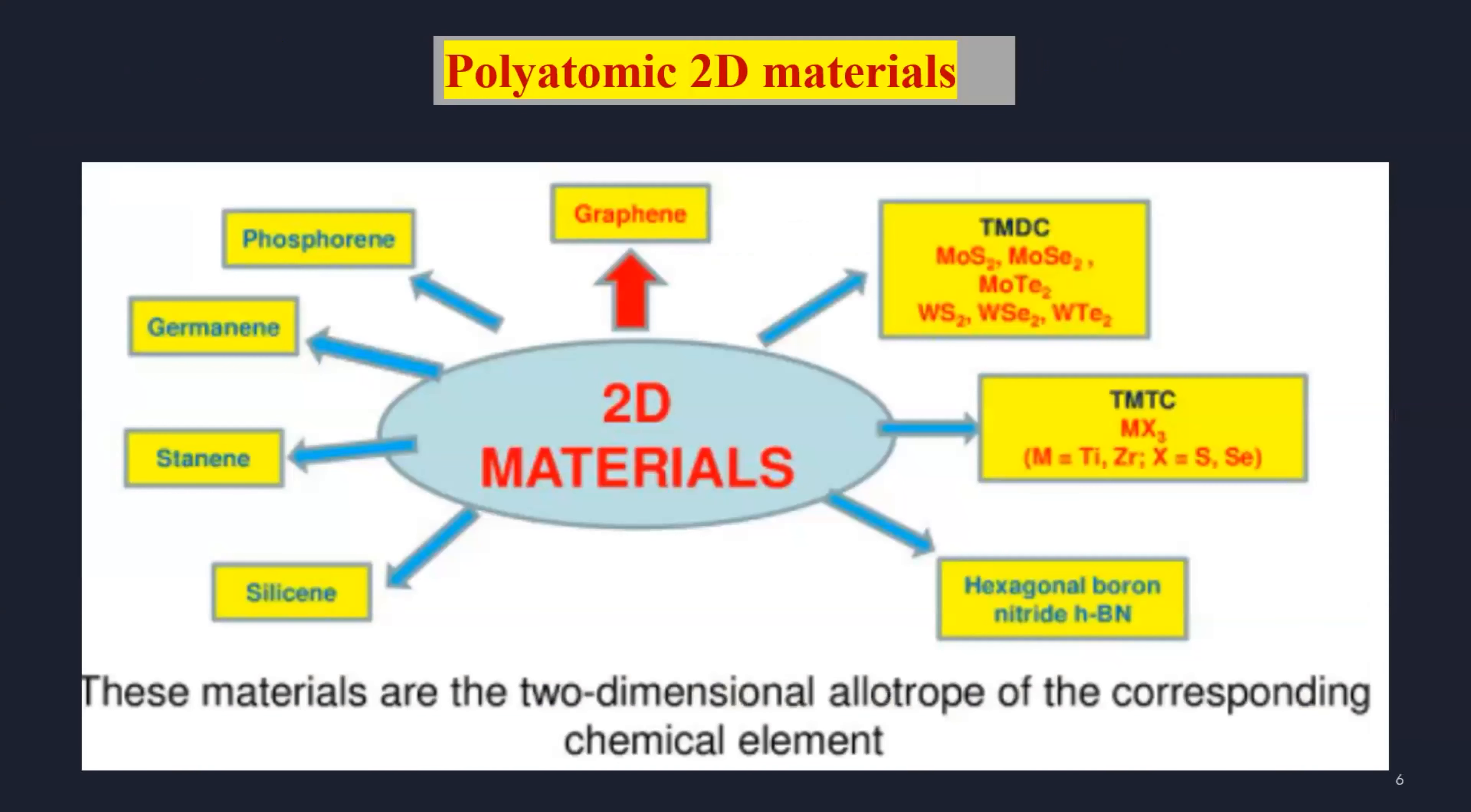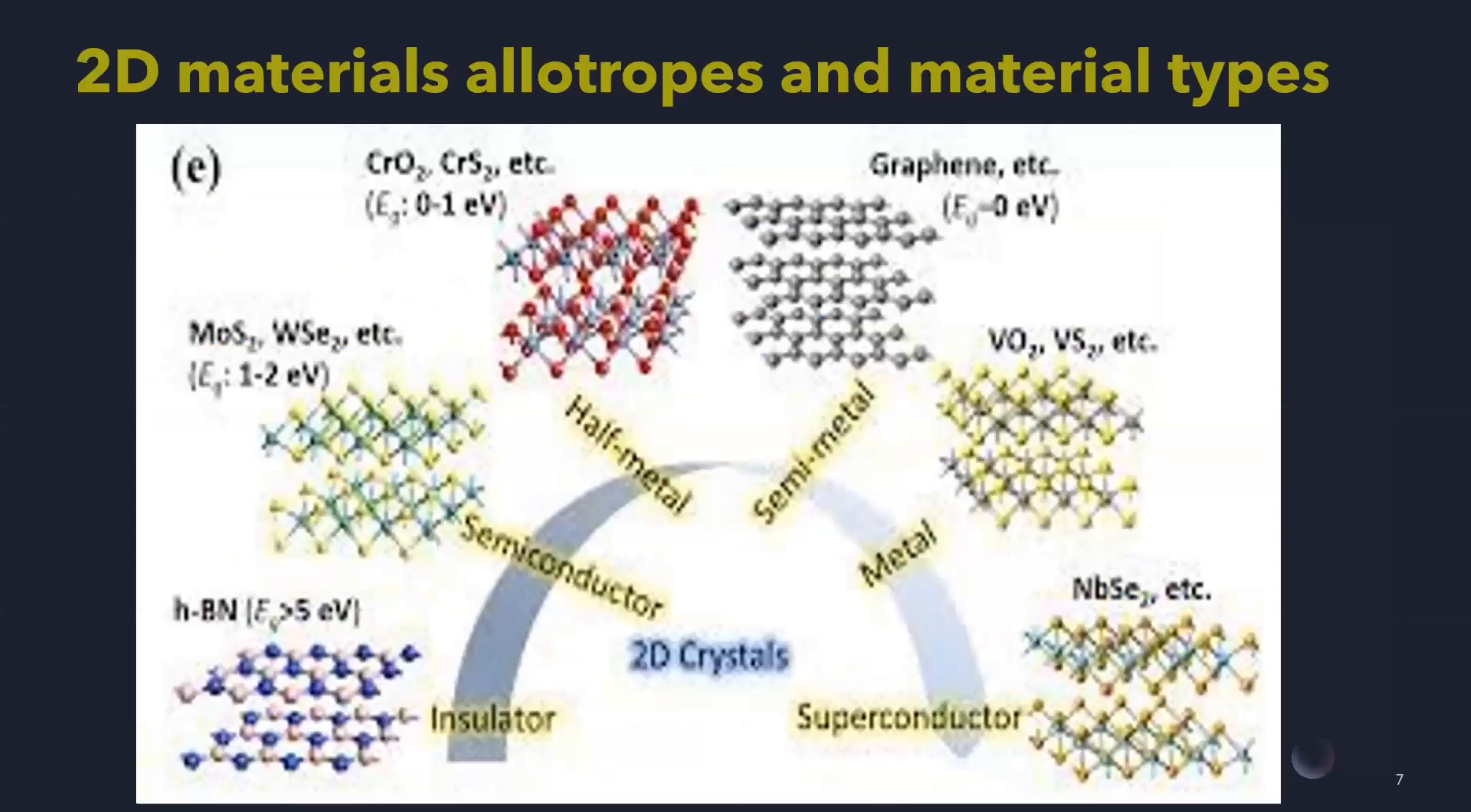Also, we can find polyatomic 2D materials, such as transition metal dichalcogenides, hexagonal boron nitride, and recently perovskite and spinel 2D materials. These materials can be insulator, semiconductor, half metal, or metal, according to the materials and the allotropes.